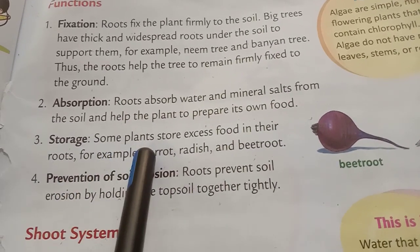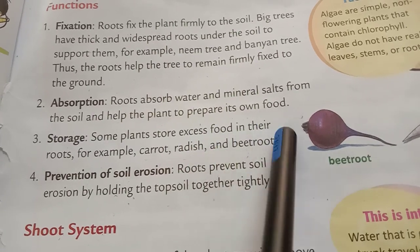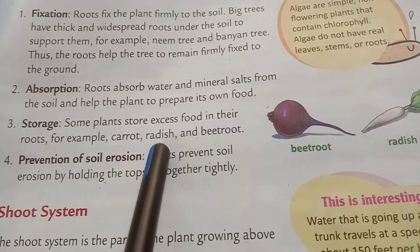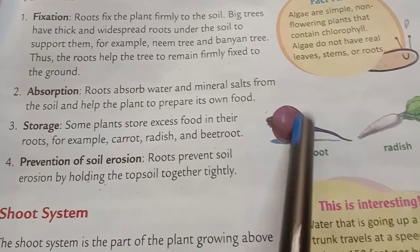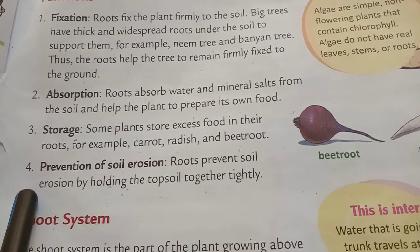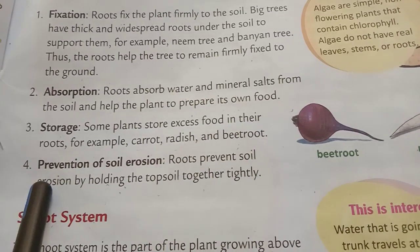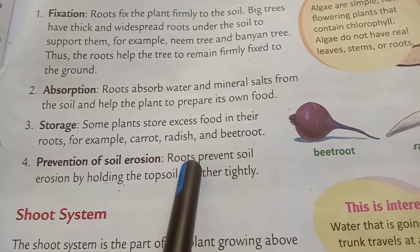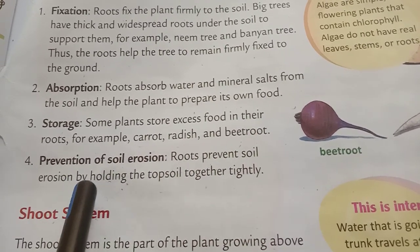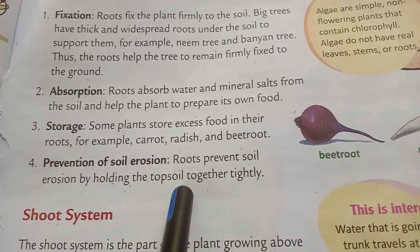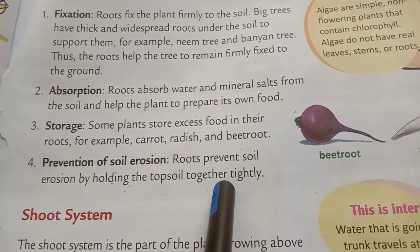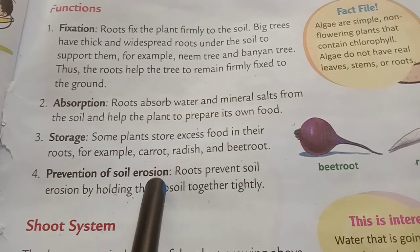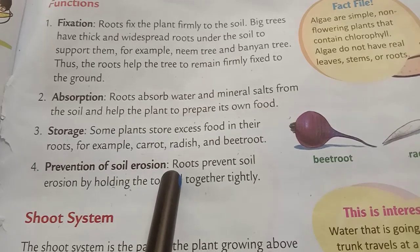Now storage — some plants store excess food in their roots. For example, carrot, radish and beetroot. You can see the picture here. The fourth function is prevention of soil erosion — roots prevent soil erosion by holding the top soil together tightly.